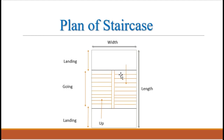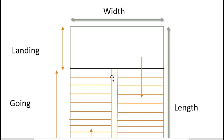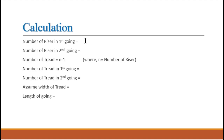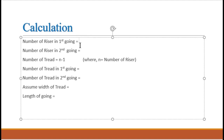Moving forward, we need to know the number of risers in the first going. This is our first going, this is our landing, and this is our second going. This little space is the spacing between the goings. Our total number of risers is 21, so we will keep 11 in the first going and 10 in the second going.